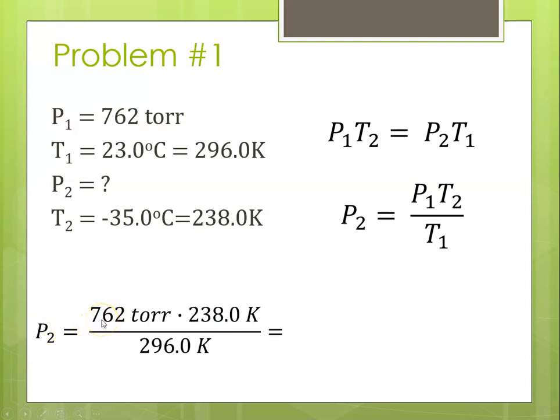So P2 is our P1, 762 torr, times our T2, which is 238, divided by our T1, which was 296. Now we need to cancel units. Kelvin cancels out. And when we plug this into our calculator, 762 times 238 divided by 296, we get 612.689.